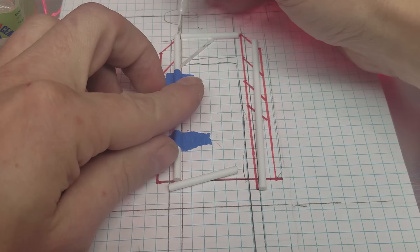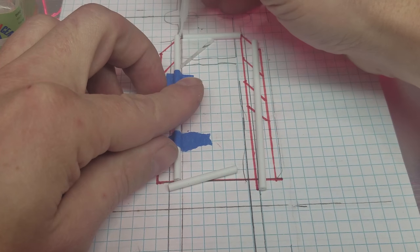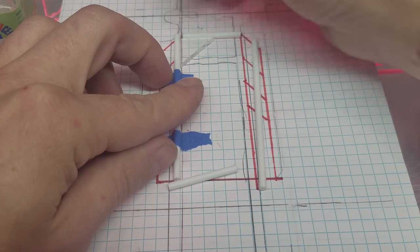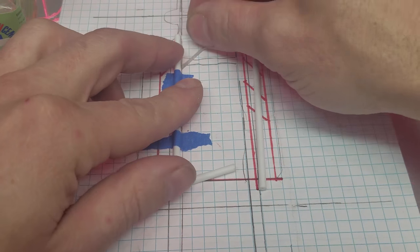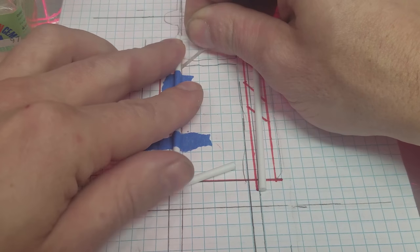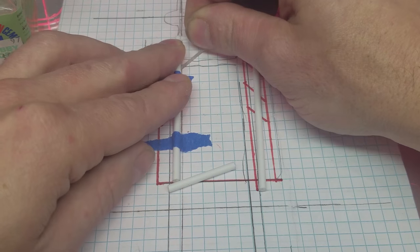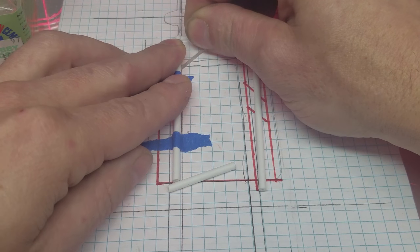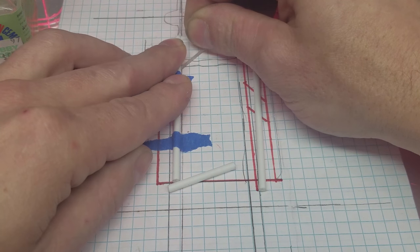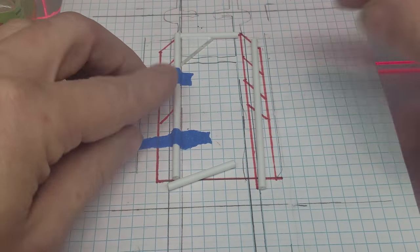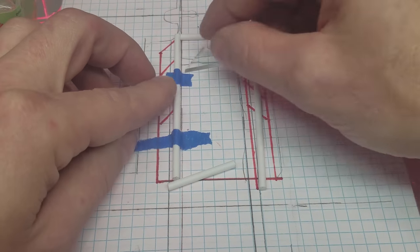So what we'll do, we'll just take a little bit, dab it in here, line up this piece, kind of hold it for a little bit to let that bond happen. Pull my square out.